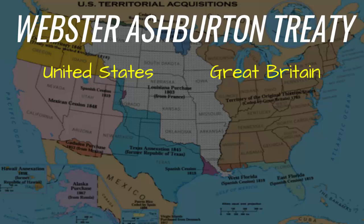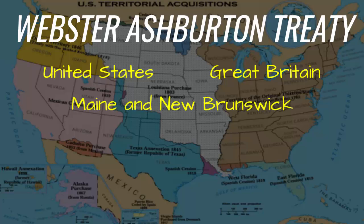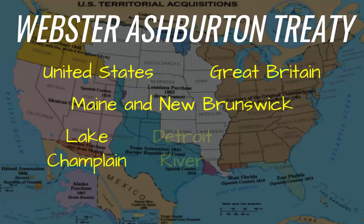The Webster-Ashburton Treaty ended disputes over the border between Maine and New Brunswick, Canada. It established a more definite border between Maine and New Brunswick, and also defined the U.S.-Canadian border at Lake Champlain, the Detroit River, and Lake Superior.